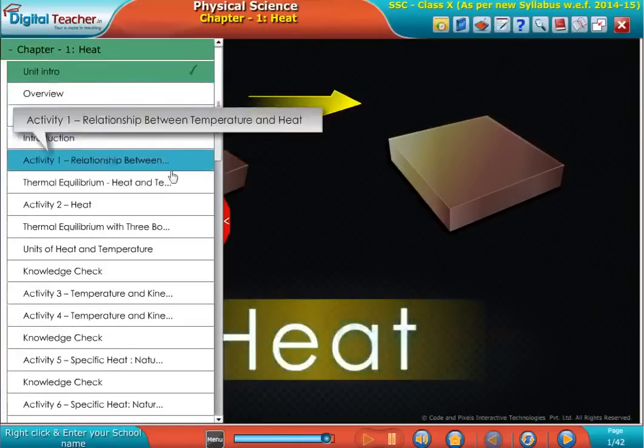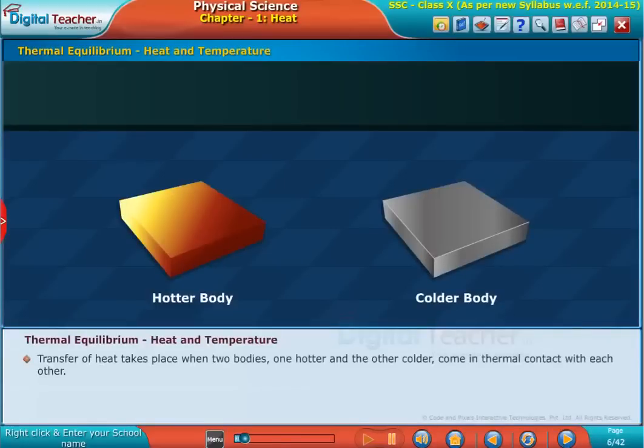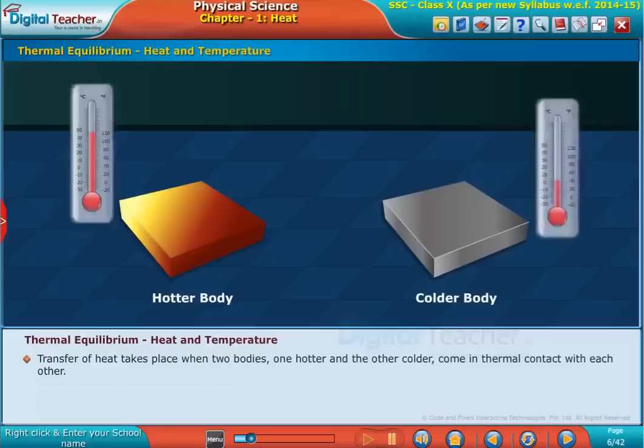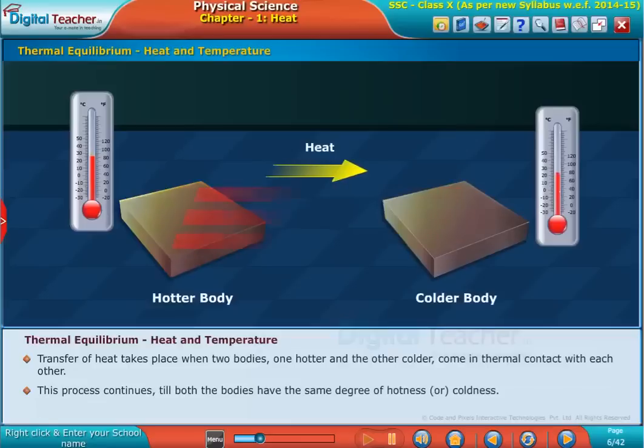Welcome to the chapter Heat, Thermal Equilibrium, Heat and Temperature. Transfer of heat takes place when two bodies, one hotter and the other colder, come in thermal contact with each other. This process continues till both bodies have the same degree of hotness or coldness.